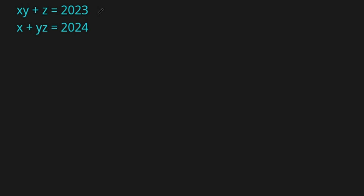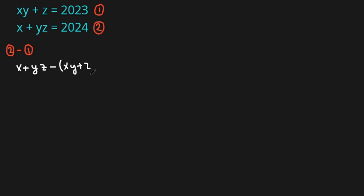I'm going to label them equation 1 and equation 2. Now I'm going to subtract the first equation from the second one. So we have (x plus y times z) minus (x times y plus z), and all this equals 2024 minus 2023.